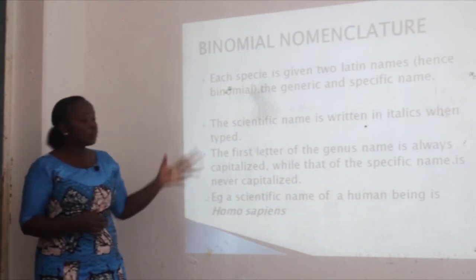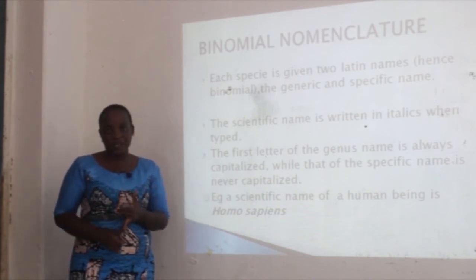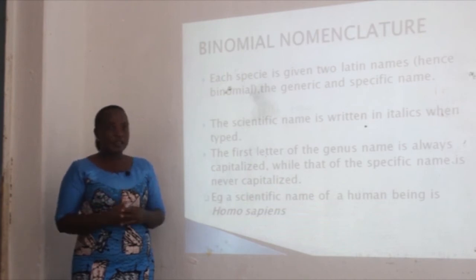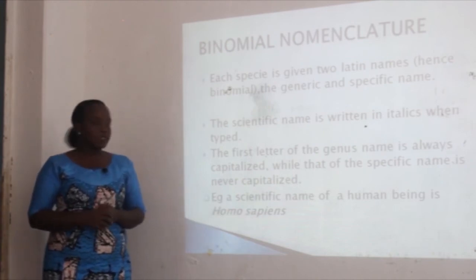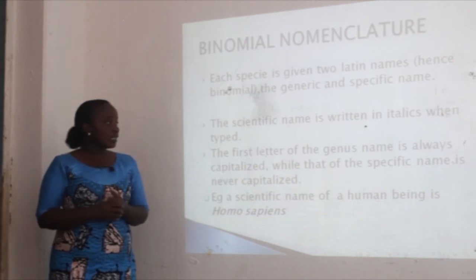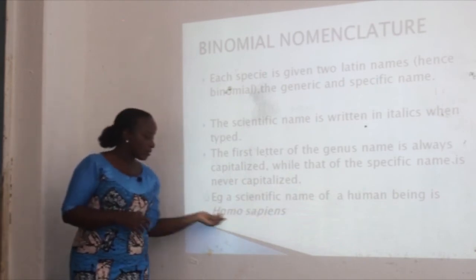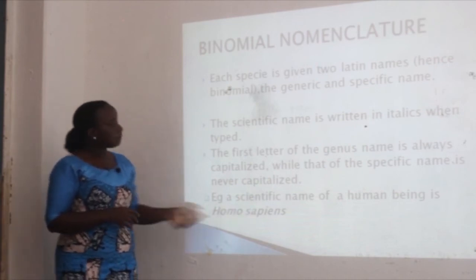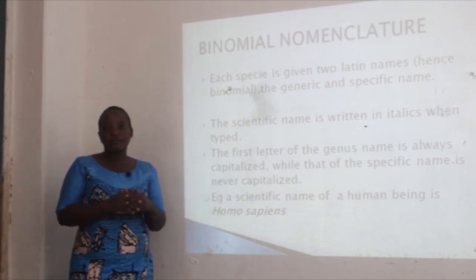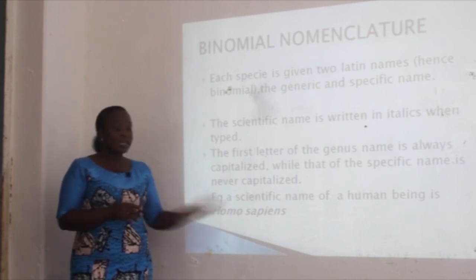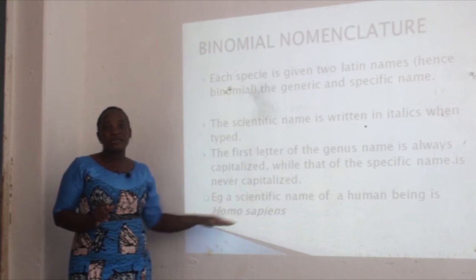In a quick review: binomial nomenclature is a system of naming organisms where an organism is given two Latin names — the generic and the specific name. The generic name normally comes first. For example, the scientific name of a human being is Homo sapiens — 'Homo' is the generic name and 'sapiens' is the specific name. When typed, the scientific name must be written in italics. When written by hand, the names must be underlined separately — you underline 'Homo' separately and 'sapiens' separately.